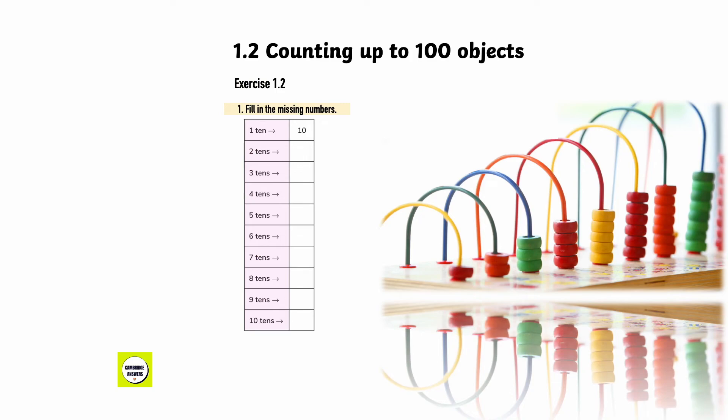Exercise 1.2. Counting up to 100 objects. 1 ten, 10. 2 tens, 20. 3 tens, 30. 4 tens, 40. 5 tens, 50. 6 tens, 60. 7 tens, 70. 8 tens, 80. 9 tens, 90. 10 tens, 100.